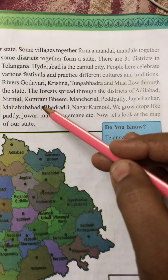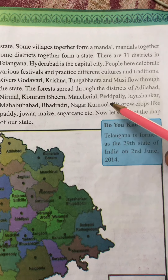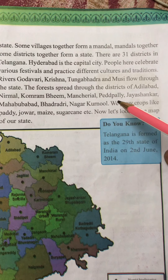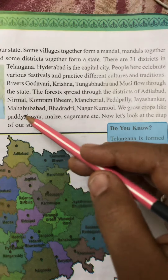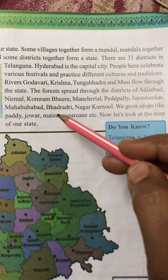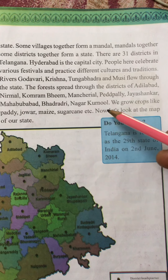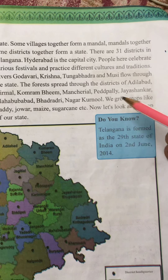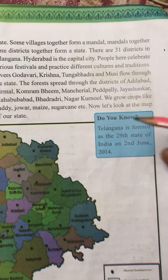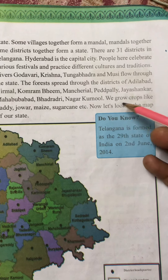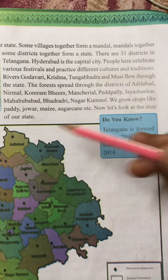The forests spread through the districts of Nirmal, Komarambhim, Manchiriyal, Peddapalli, Jaisankar, Bhupalapalli, Padradhri, and Nagarkarnool. These are the forested districts of Telangana state.